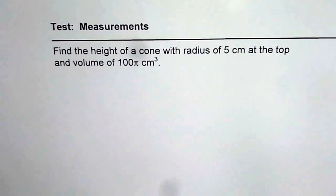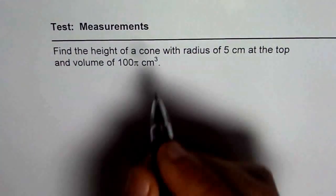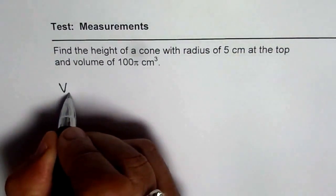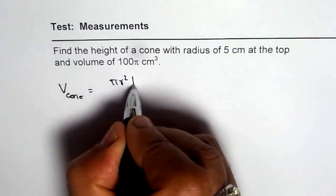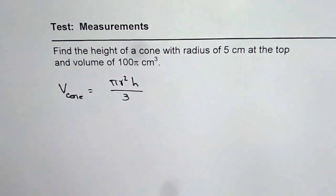You can pause the video and answer the question. Some of you may not remember the formula. The volume of a cone is πr²h divided by 3. That is the easy way of remembering the formula - it's the volume of a cylinder divided by 3.